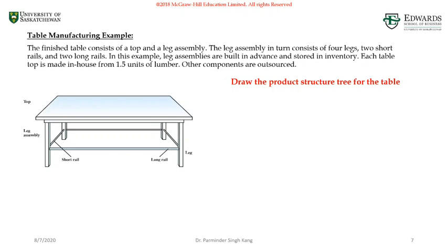So let's look into the second example of product structure tree for a table manufacturer. In this scenario, we are given some information on assembling a table. The finished table consists of a tabletop and a leg assembly. At level 0, we have the complete table as a finished product and this table has two children: a tabletop and a leg assembly.